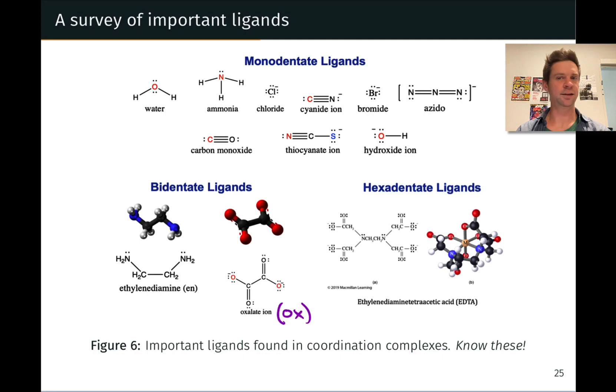The other thing that's worth practicing with these is making sure you can identify where the potential ligand donors are. Why is oxalate considered bidentate? What are the two atoms that are most likely to bind to a metal center? Where is the ligand donor atom in cyanide, in carbon monoxide? In fact, the ligand donor atom in a number of these is highlighted in red, showing you the electron-rich atom with the lone pair that can be donated to the metal center.